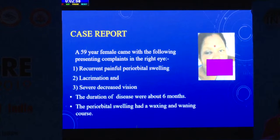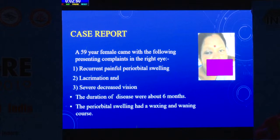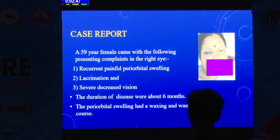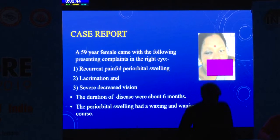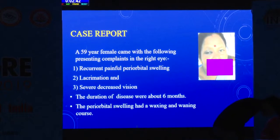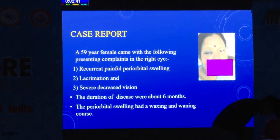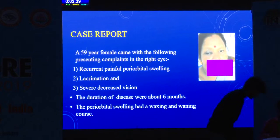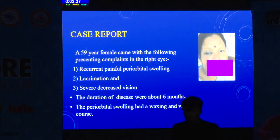Now, my case report. A 59-year-old female presenting with complaints in the right eye: recurrent painful periorbital swelling, lacrimation, and severe decreased vision — only hand movement was present. The duration of disease was about six months, and the periorbital swelling had a waxing and waning course.